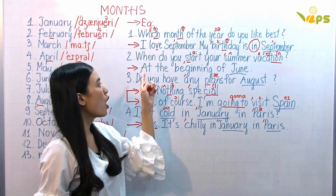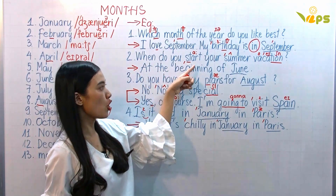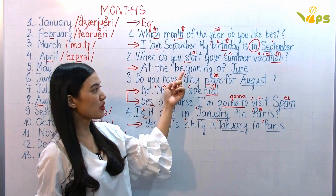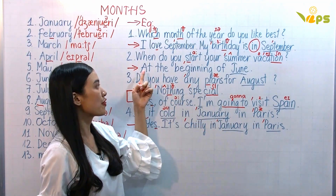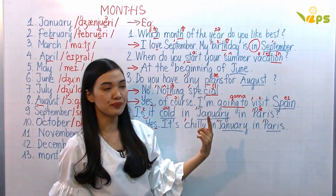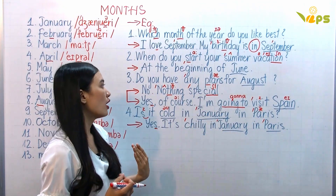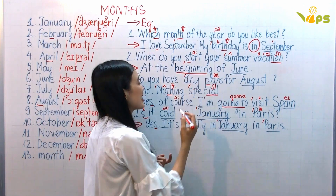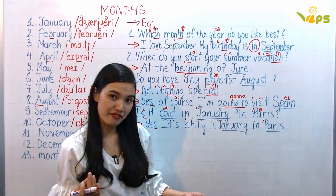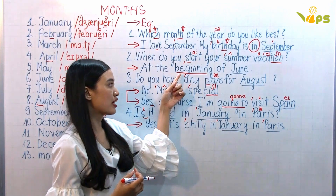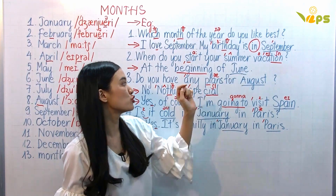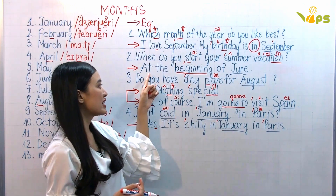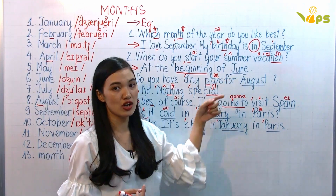Number two: When do you start your summer vacation? At the beginning of June. Remember, we say 'at the beginning of' and then the month, or 'at the end of June,' or 'at the middle of June.'